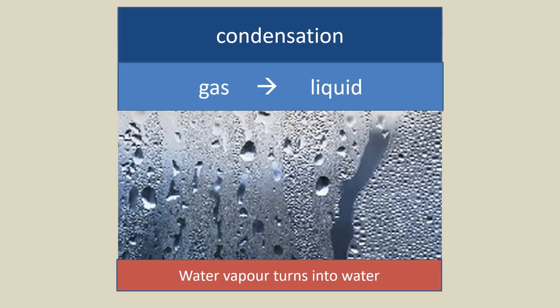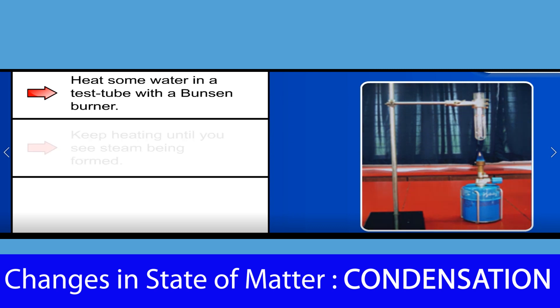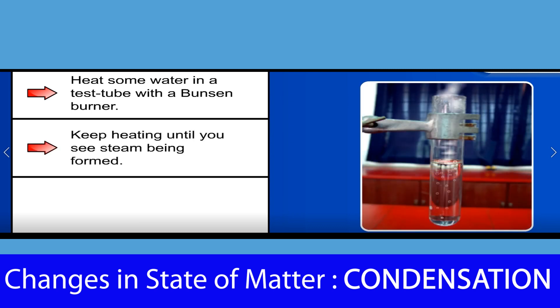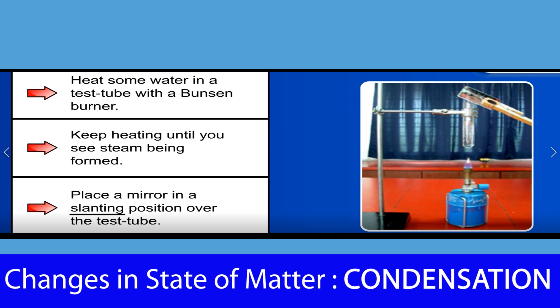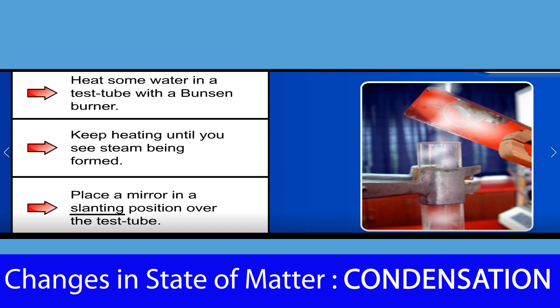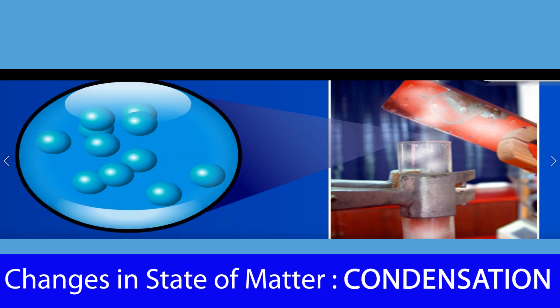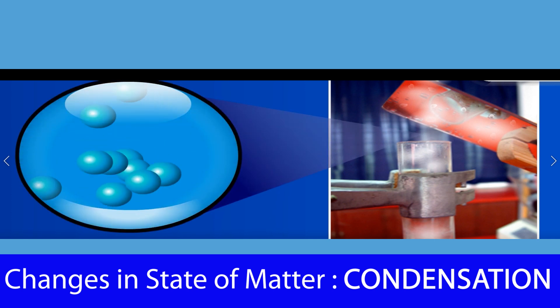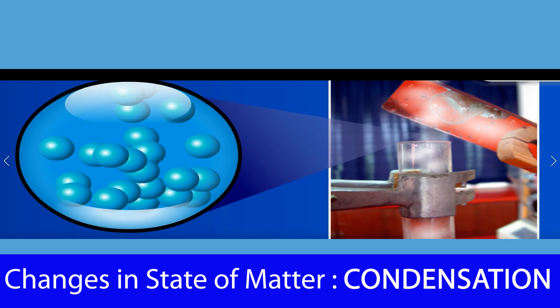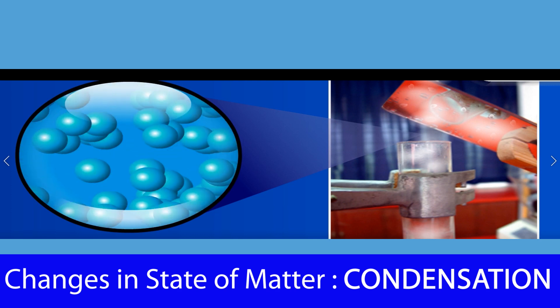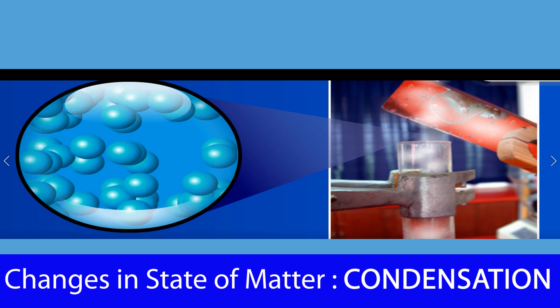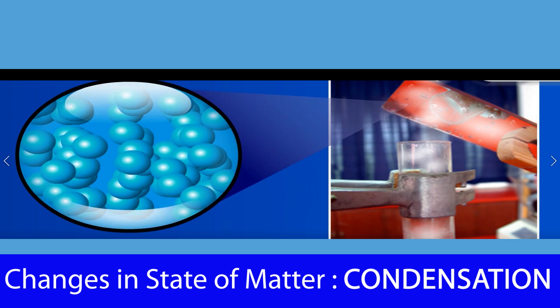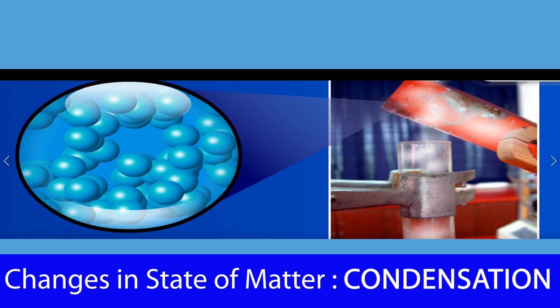What is condensation? During condensation, gas turns into liquid. For example, water vapor or steam turns into water. Let's look at this activity: heat some water in a test tube with a Bunsen burner until steam forms, then place a mirror at a slanting position over the test tube. When the steam contacts the mirror, the water vapor releases heat energy. The particles lose energy, move slower, and come closer together. When the temperature reaches or drops below the boiling point, steam turns into water droplets on the surface of the mirror. So gas turns into liquid during condensation.